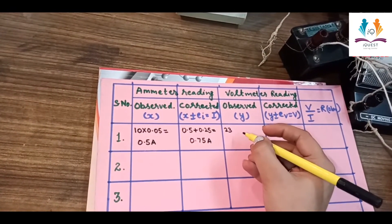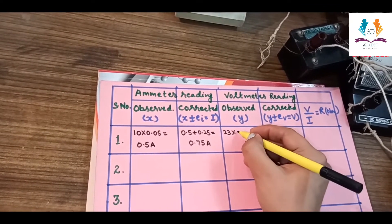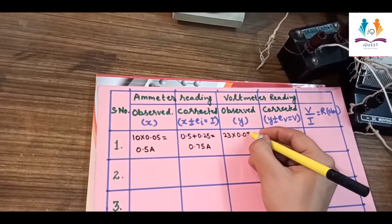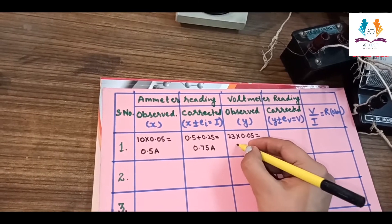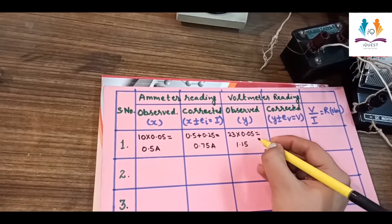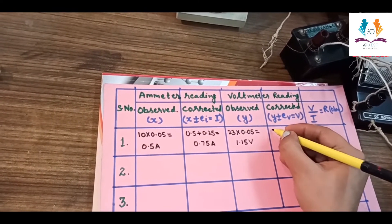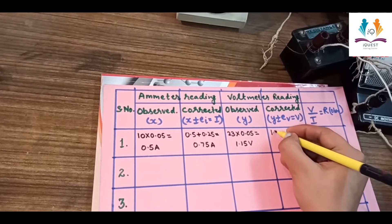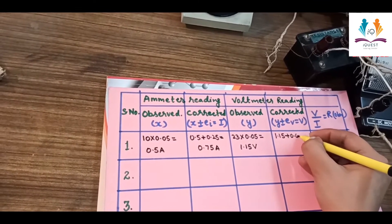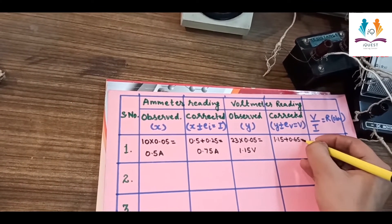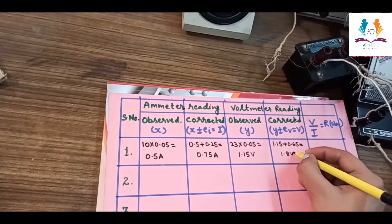To calculate the voltmeter reading: 23 divisions into the least count of 0.05 volt equals 1.15 volt. To find the corrected reading, we add the error: 1.15 plus 0.65 equals 1.8 volt.